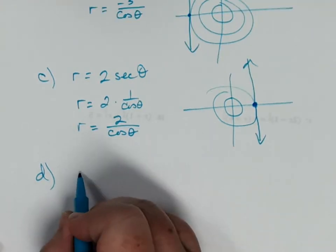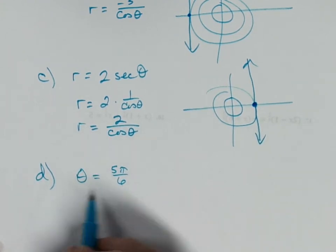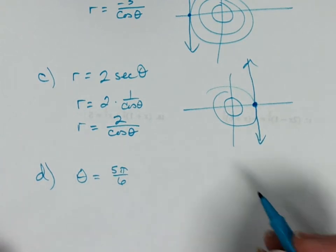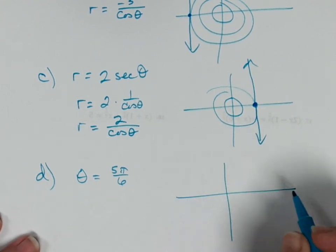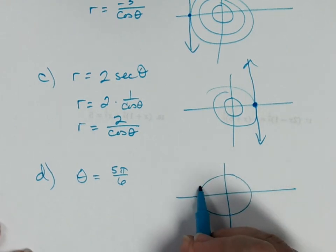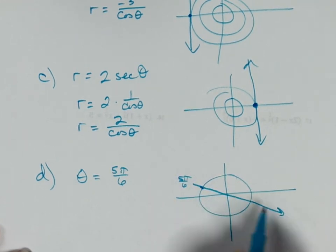The last example is theta equals 5 pi over 6, and that's all that it says. It doesn't have r. There is a way to graph these on a graphing calculator, but it's very complicated, so I'm not going to show you that. We would simply just come through and have any given circle. We just need one circle. Find 5 pi over 6 on that circle. Here's where 5 pi over 6 is on a circle, and we draw it through the pole, and there is the graph of theta equals 5 pi over 6.